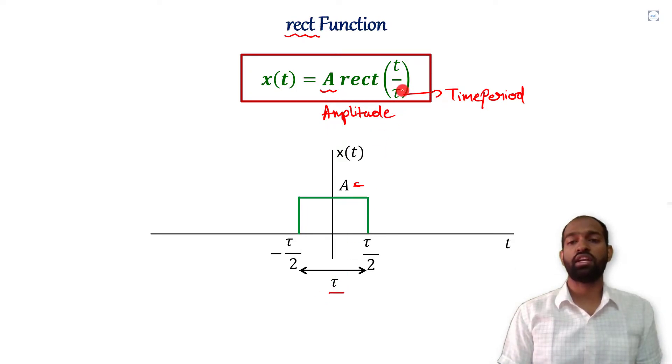How we can draw it? We can draw it by simply drawing a rectangular signal like this whose amplitude is A and time period is τ. We have to consider origin as center and we have to divide it by two parts. This τ by two parts, so that it will become τ/2 plus τ/2, so that it will be equal to τ.